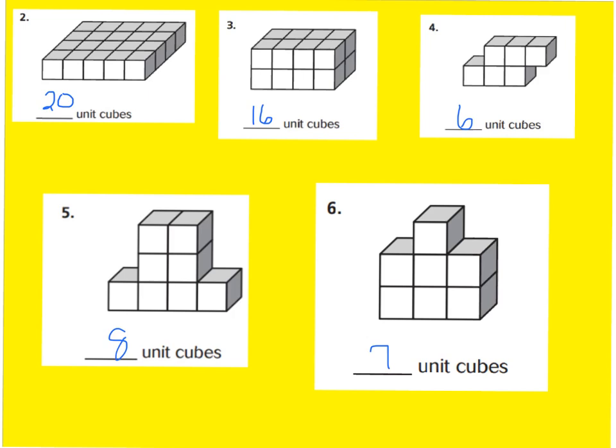For number five, I have four cubes on the bottom horizontally, two cubes stacked above that, and then two more cubes stacked above that. Four plus two plus two is eight. And for number six, I have seven cubes. I have three on the bottom row, three on the second row, and one on the top. I hope our answers matched. Now, let's move on.